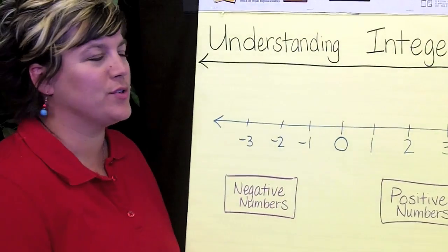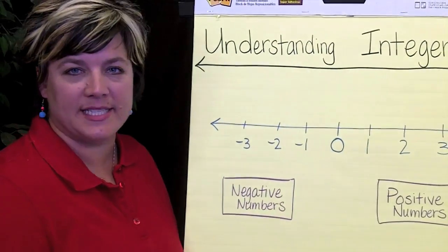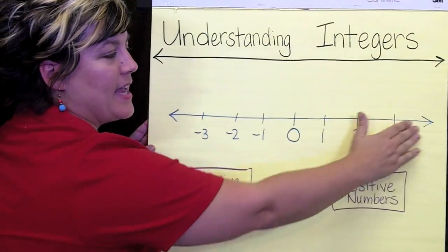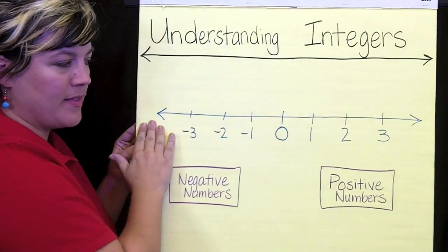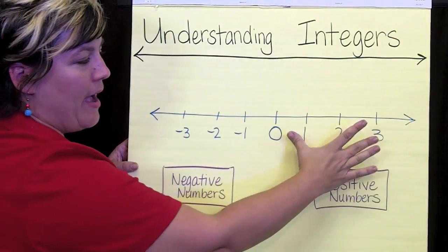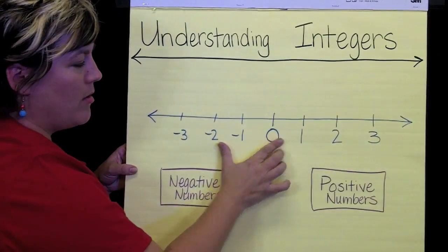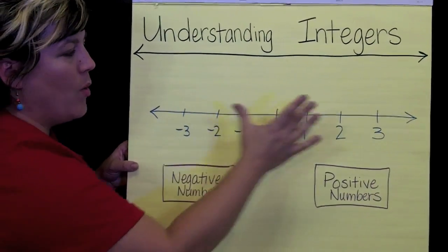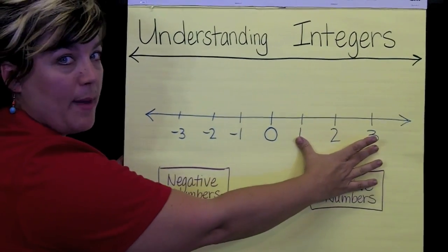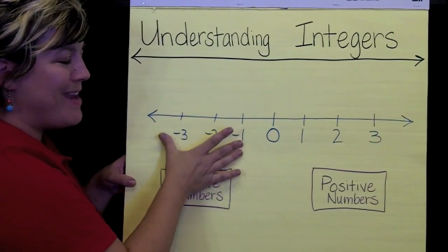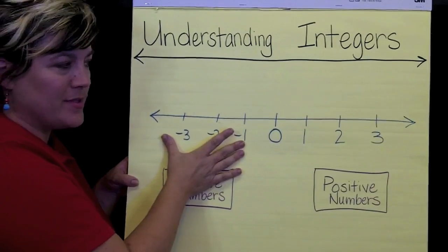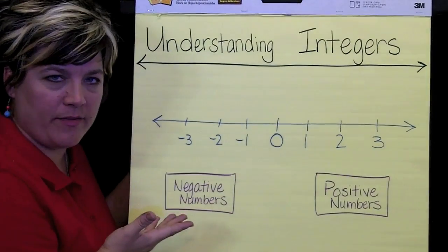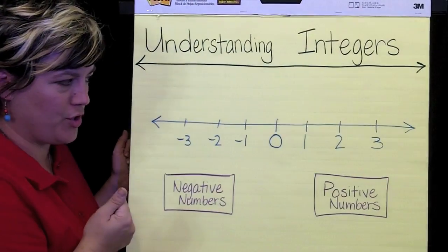Understanding integers is a really simple idea. Basically, if we're looking at a number line like this, we have numbers on the right side of the zero and numbers on the left side of the zero. We have positive numbers or whole numbers and negative numbers. They're all integers — every single one of them.